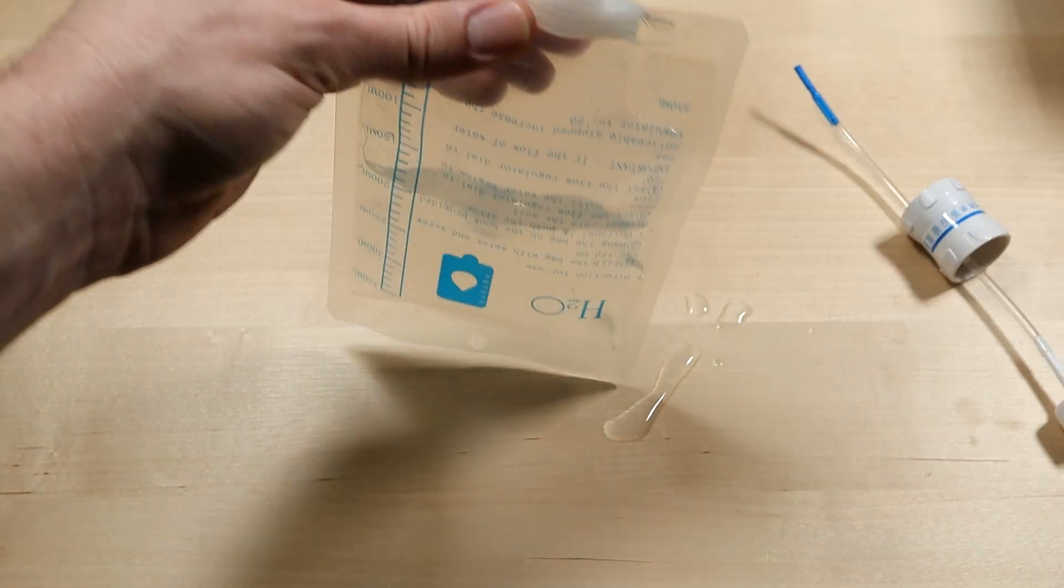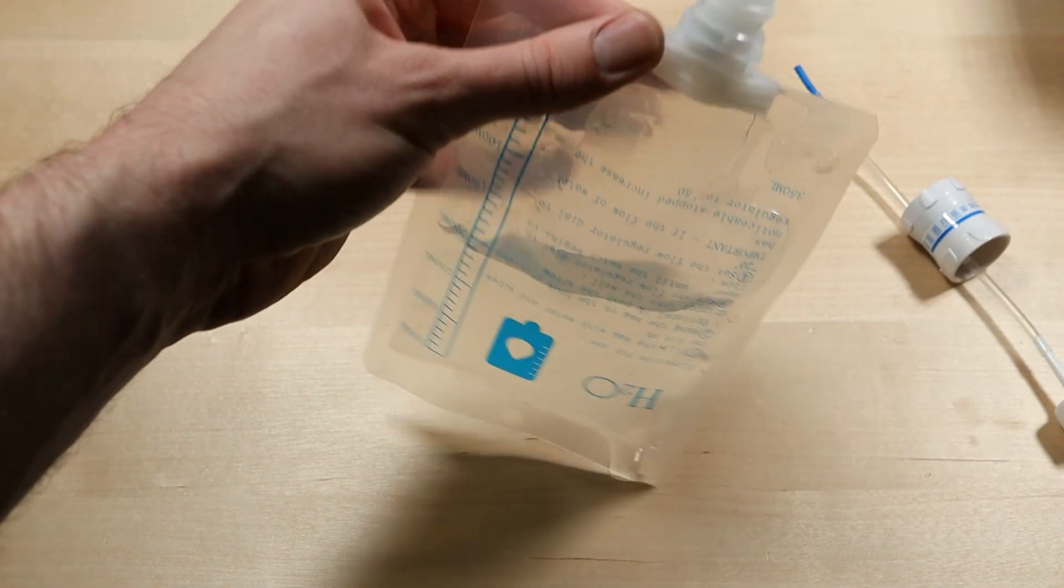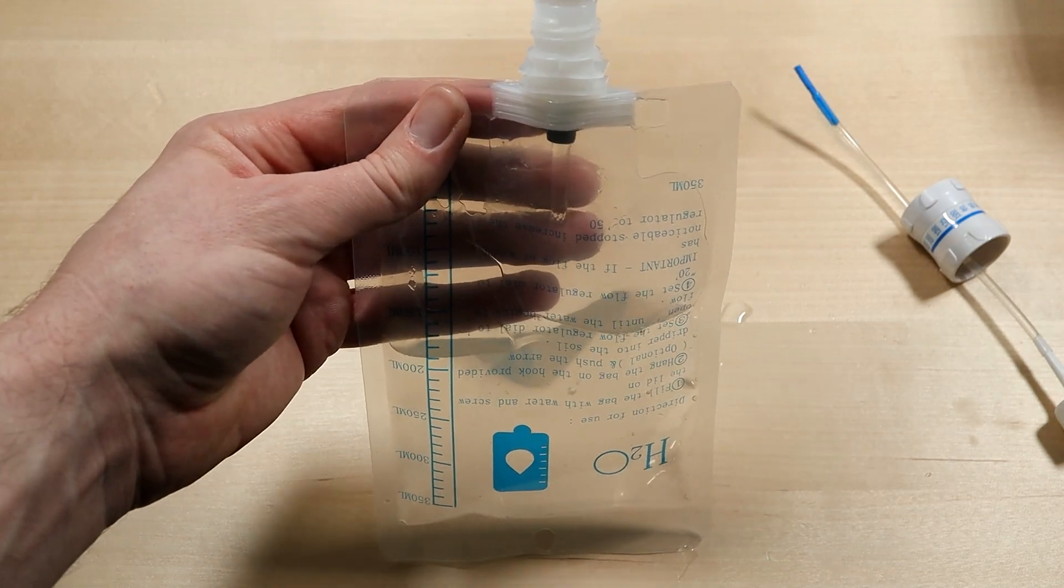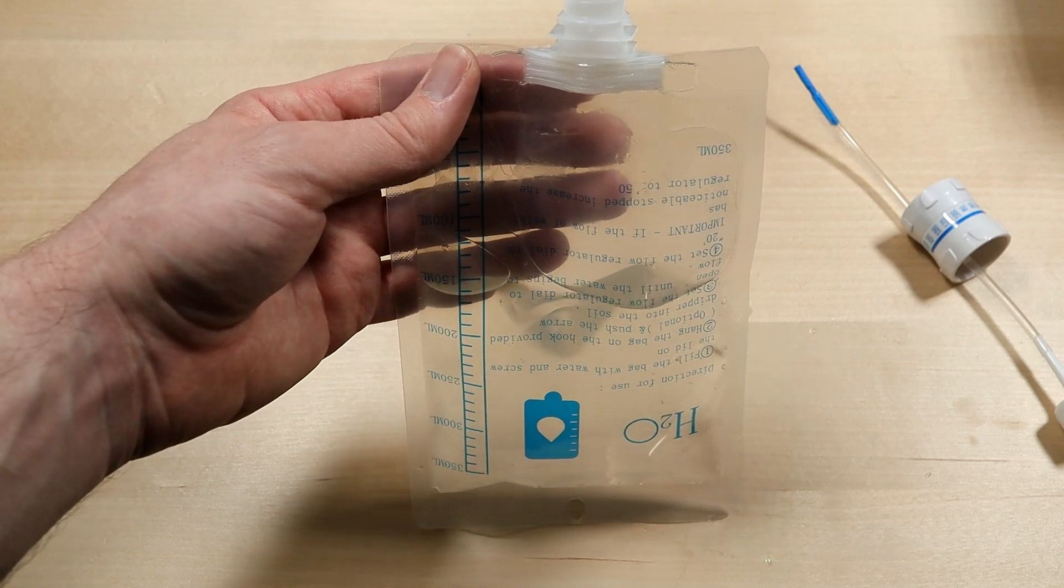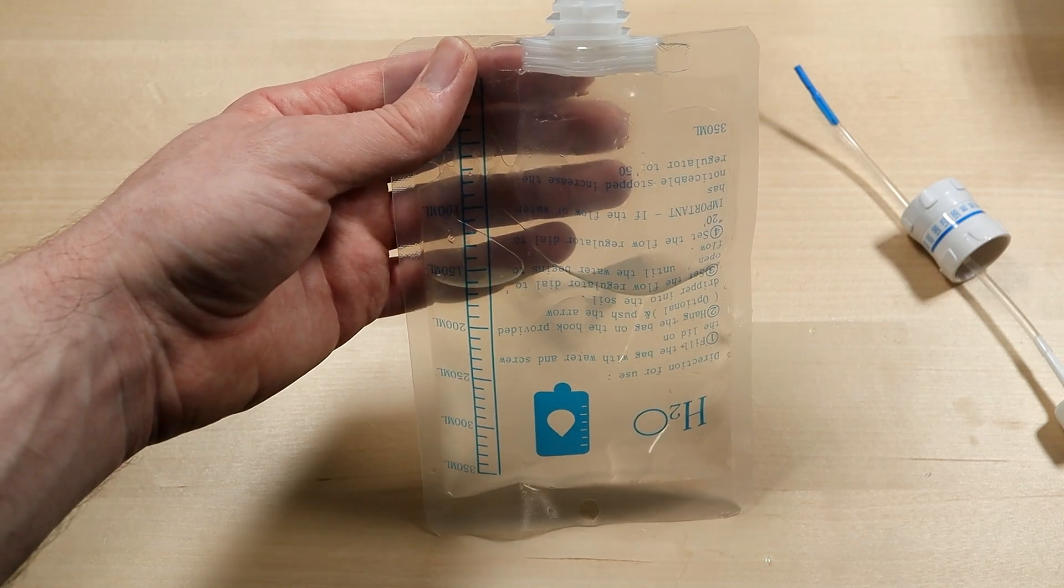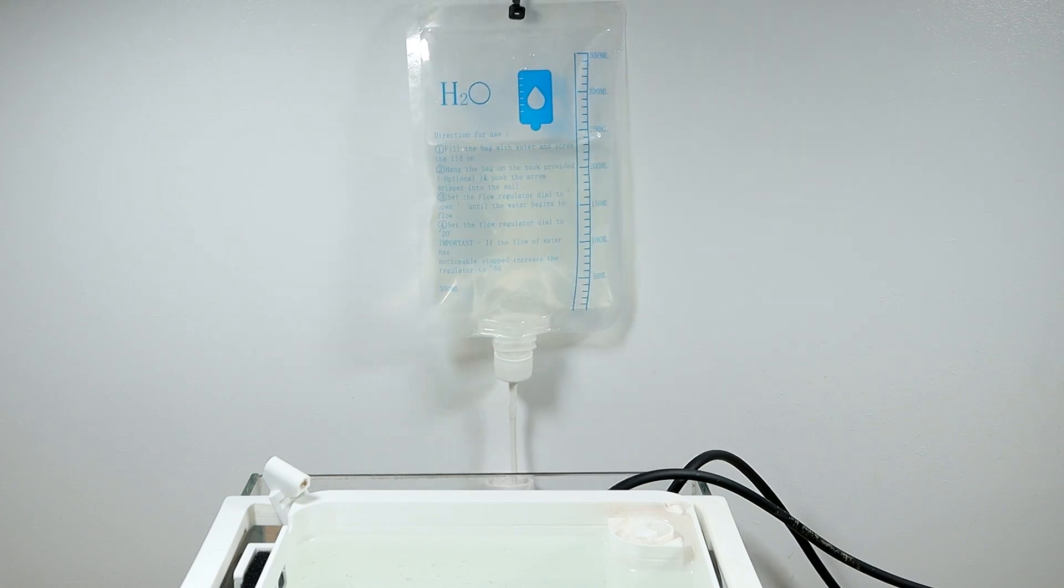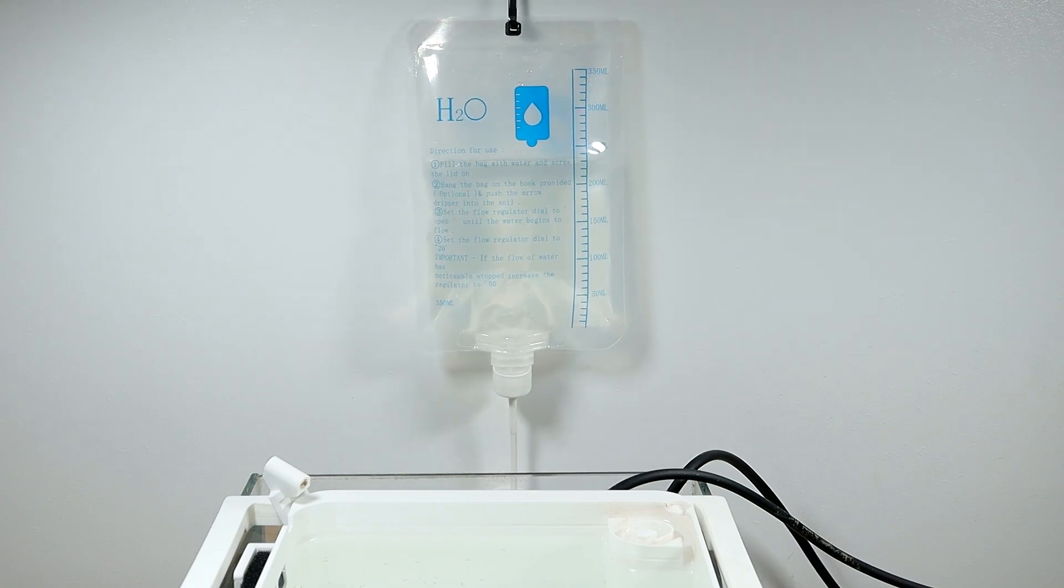This bag tops out at about 350 milliliters, which should be plenty for a day assuming that the culture is dense enough. I've found a turkey baster to be really helpful for filling these up, and a bit less clumsy than trying to pour them through a funnel. With the bag filled, I hung it above my tank and fry tray and opened up the valve.